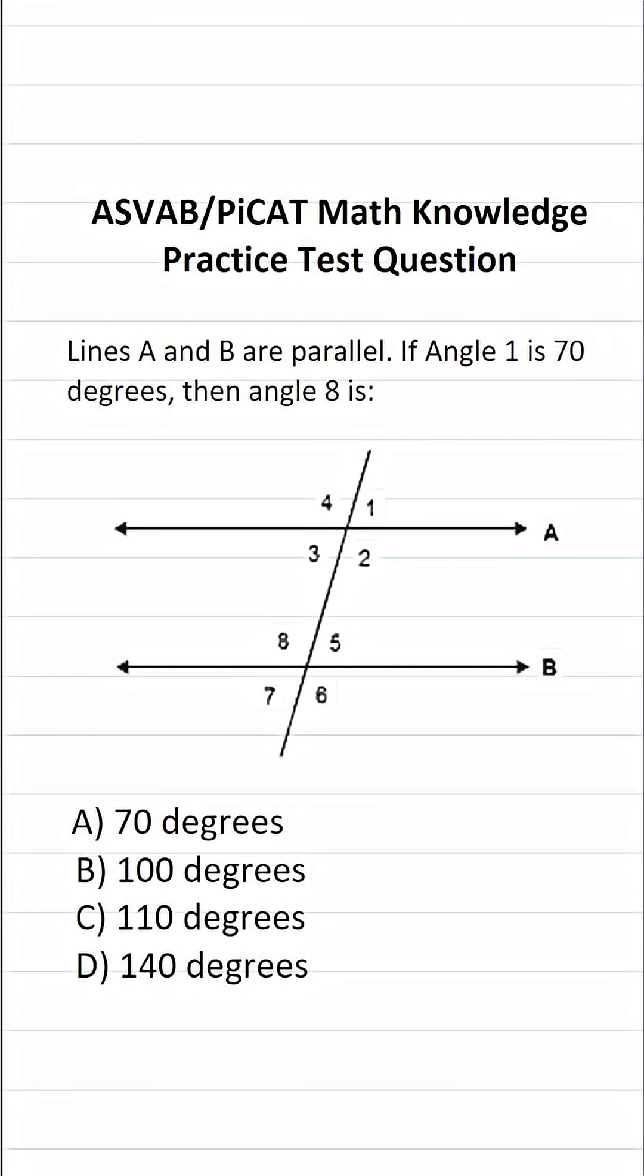Let's look at the diagram. We can see that A and B are parallel lines, and we have a transversal that cuts across both of these parallel lines. We know that angle 1 is 70 degrees, and we want to know the measure of angle 8.